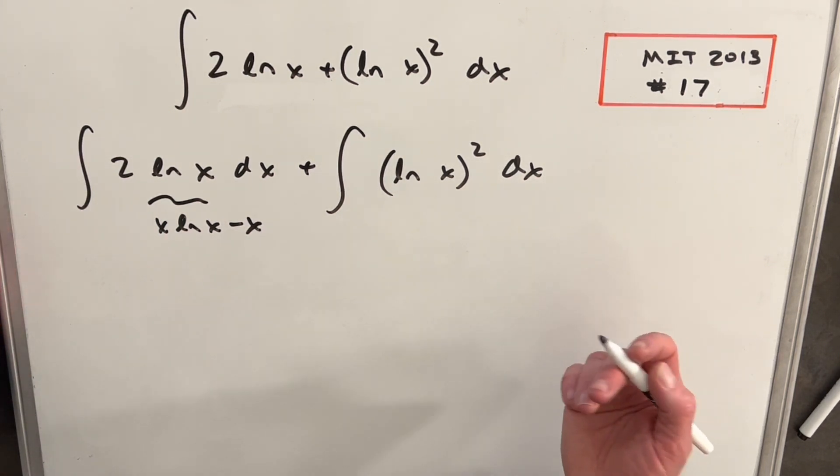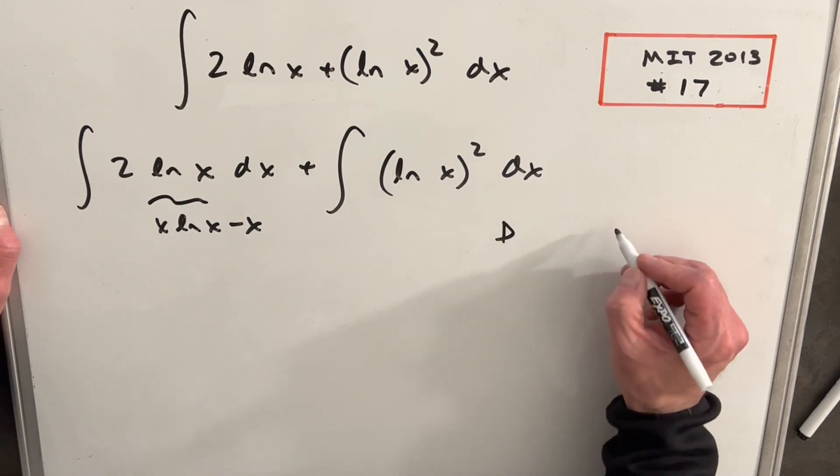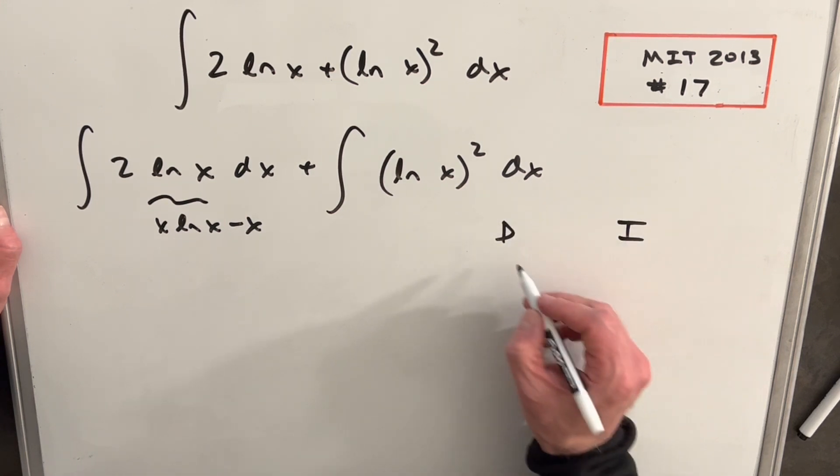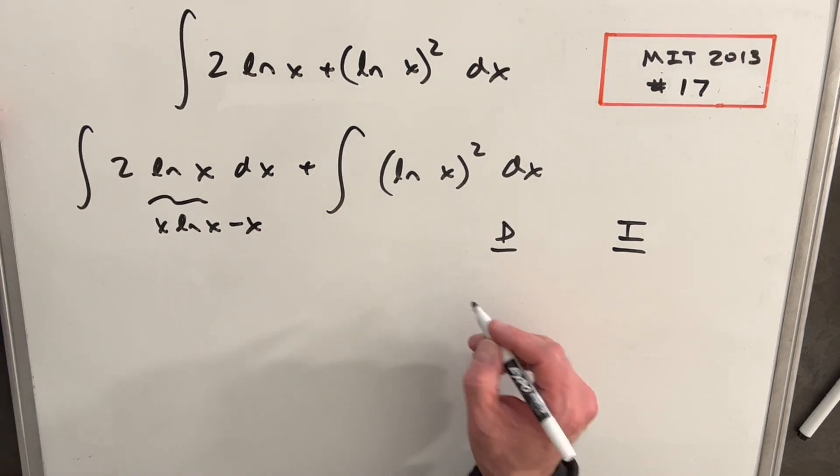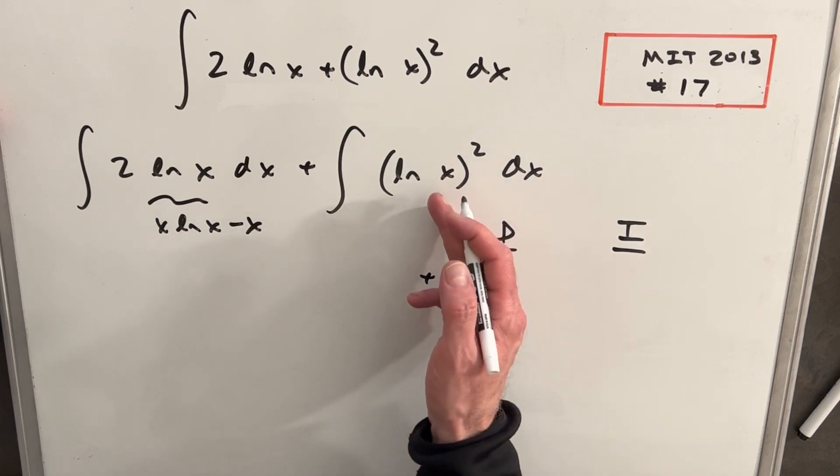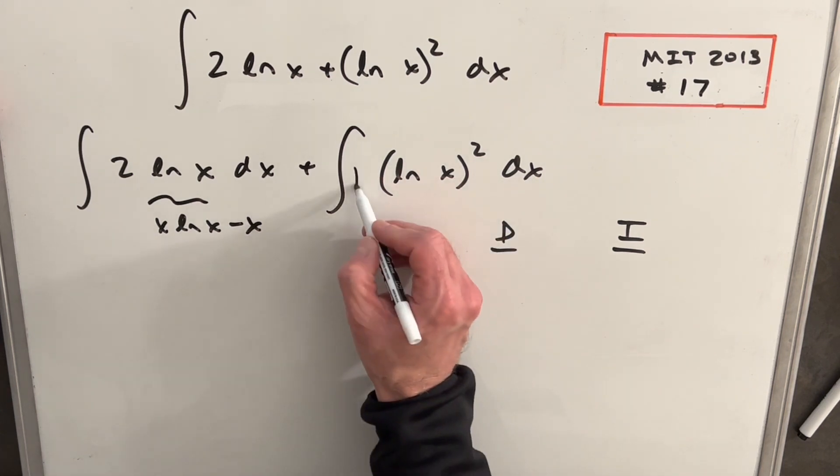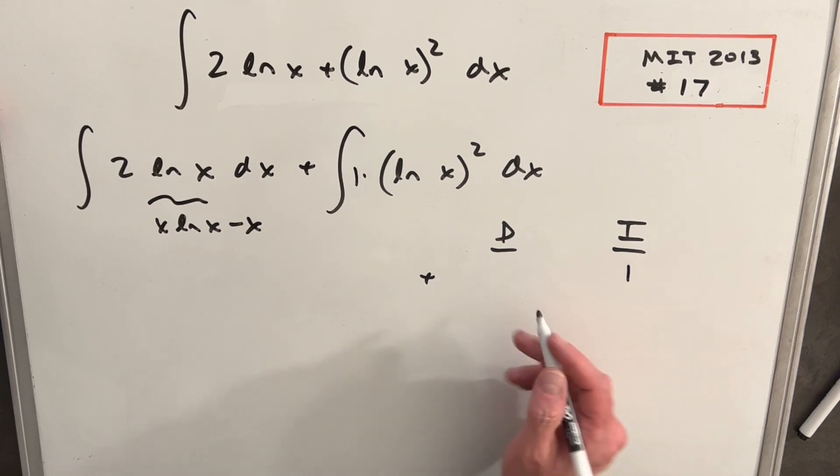Because we have ln x, I'm going to use integration by parts using the DI method, tabular integration, to set this up. I want to differentiate. We don't really know how to integrate this, so I'm going to create a 1 in front. We'll integrate the 1.